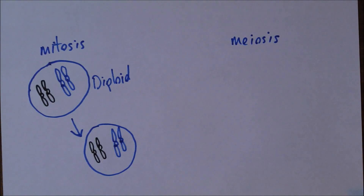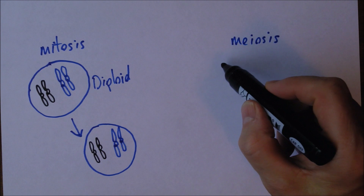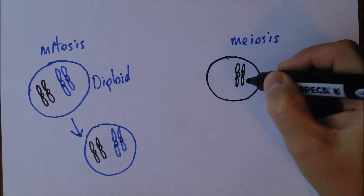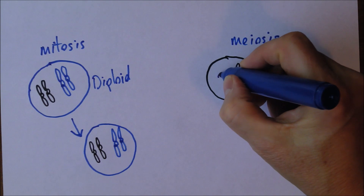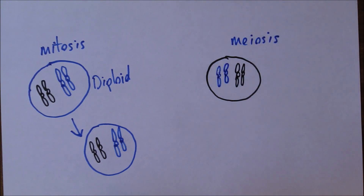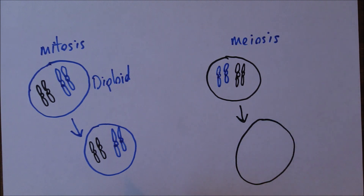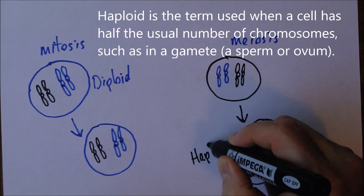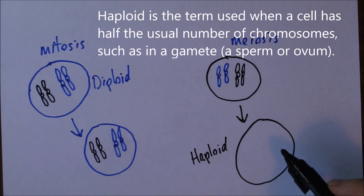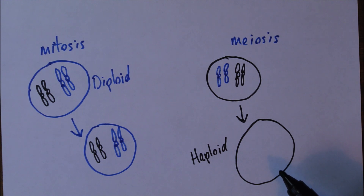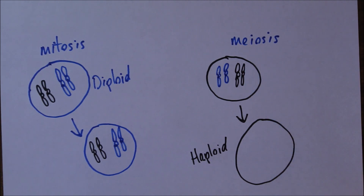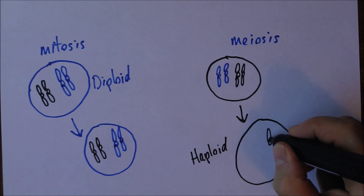In meiosis, we again start off with a diploid cell with 23 pairs of chromosomes — this could be in the ovaries or testes. The process of meiosis is a reduction cell division; we reduce the number of chromosomes present. We start with a diploid cell and want to end up with a haploid cell with half the number of chromosomes. The clever thing about meiosis is it divides the homologous pairs and puts one chromosome from each pair into separate haploid cells.